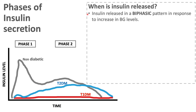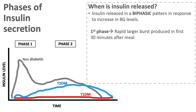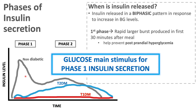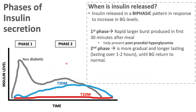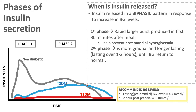We know that insulin is released in a biphasic pattern in response to an increase in blood glucose levels. We have phase 1, or the first phase insulin release. This is a rapid burst of insulin which occurs 30 minutes after a meal, and this is mainly to help bring down our postprandial blood glucose levels, and the main stimulator for this is glucose. Phase 2 is more gradual and longer lasting — over one to two hours — and it is released until our blood glucose levels come into range, usually between 4.4 to 4.7.